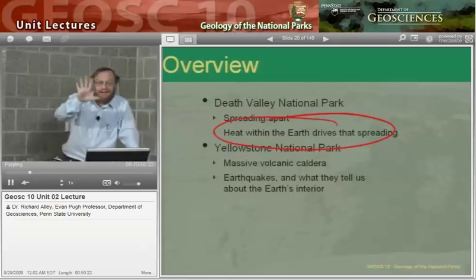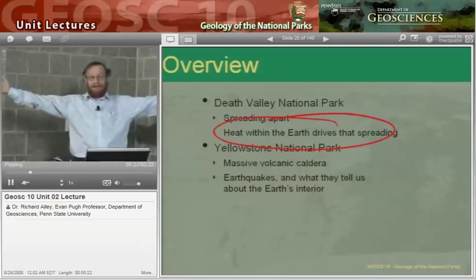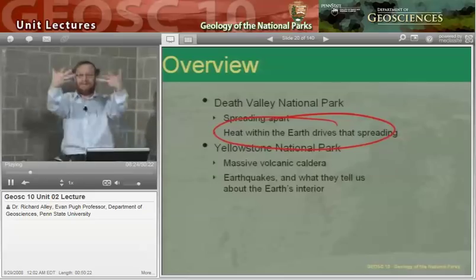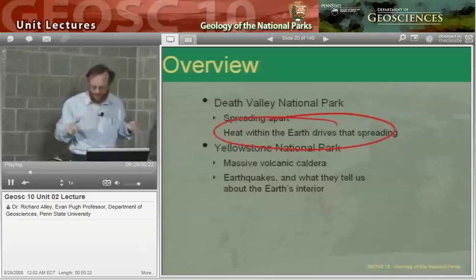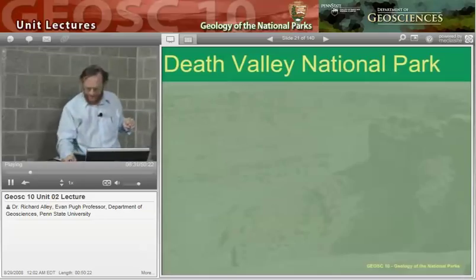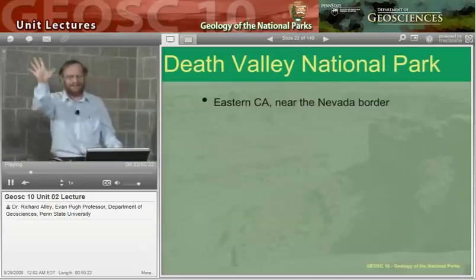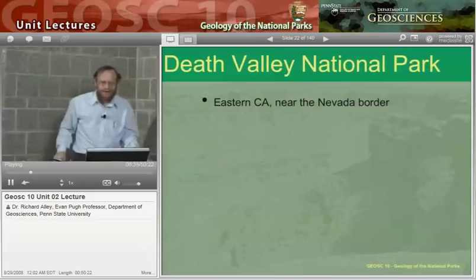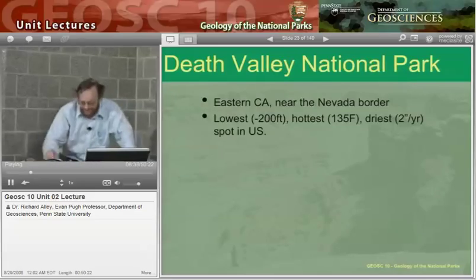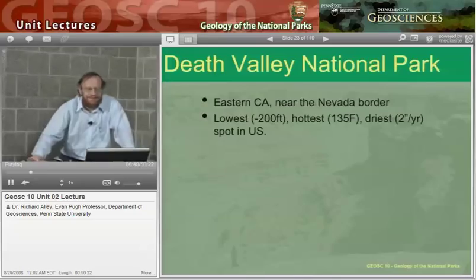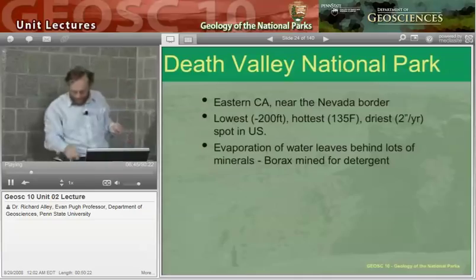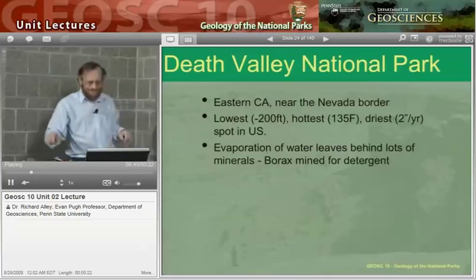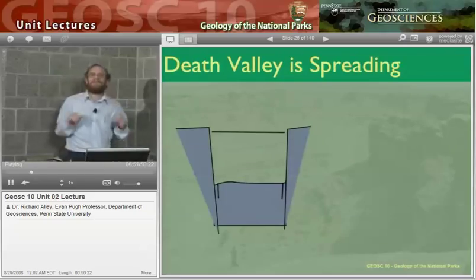Death Valley is getting bigger, and it's doing so from heat down within the planet. So that's what we have to look at now, and then we'll see what that does at Yellowstone. Death Valley — Eastern California-Nevada border — the lowest, the hottest, the driest spot in the country. The water does come down, it does evaporate, it does leave salts behind. This drove various economic activity, which is largely turned off now.